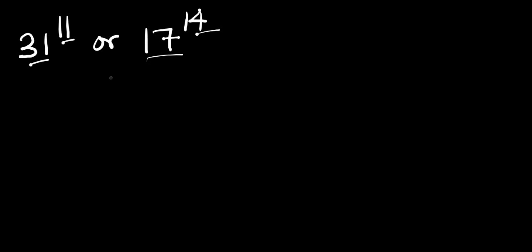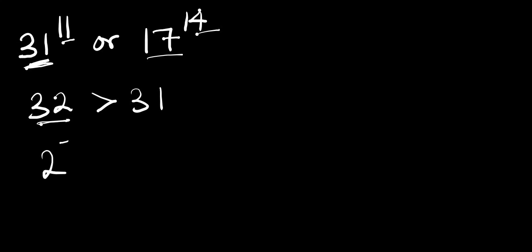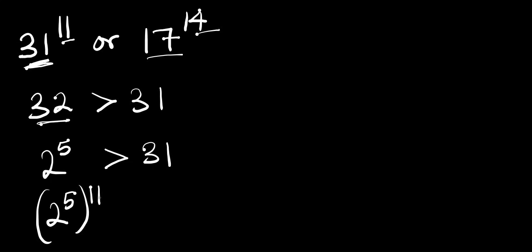Now this is the method I'm going to use. Instead of 31, I will look for the next available even number, which is 32, and we know that 32 is greater than 31. I'm going to rewrite 32 in index form, which is simply 2 to the power of 5. So that means 2 to the power of 5 is greater than 31, and therefore 2 to the power of 5, all to the power of 11, is also greater than 31 to the power of 11.